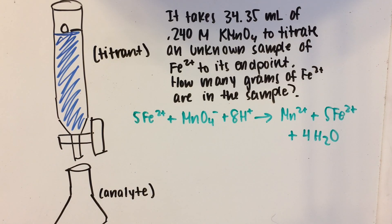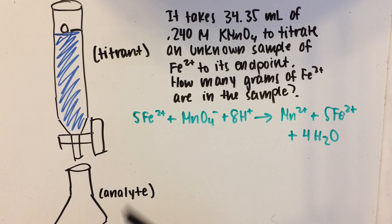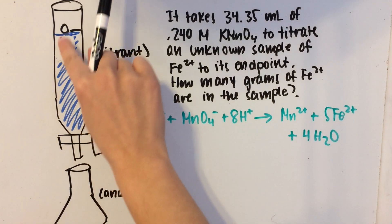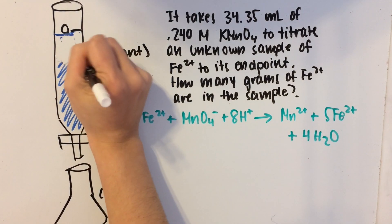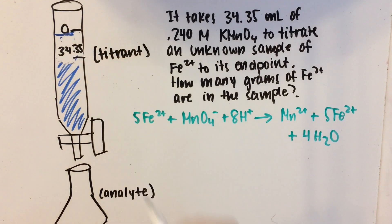We have a titration problem stating that it takes 34.35 milliliters of 0.24 molar KMnO4 to titrate an unknown sample of Fe2+ to its endpoint. How many grams of Fe2+ are in the sample? I drew out a picture of the burette and flask to help visualize it. We've used up 34.35 milliliters and reached the endpoint, so the analyte will have a very faint purple-pinkish color.